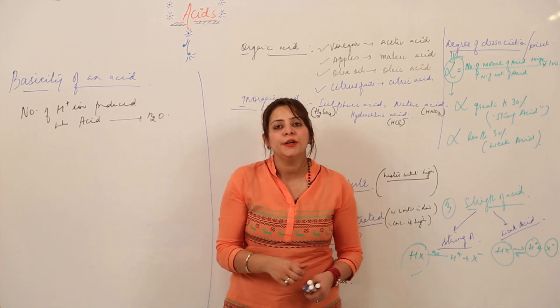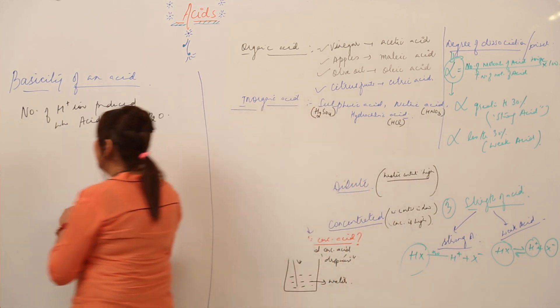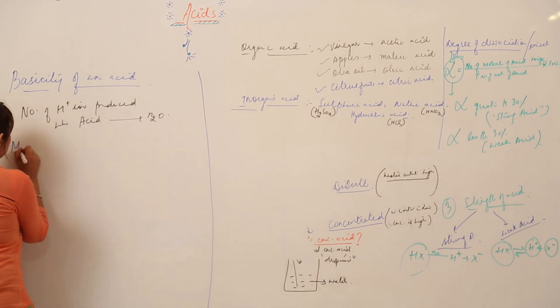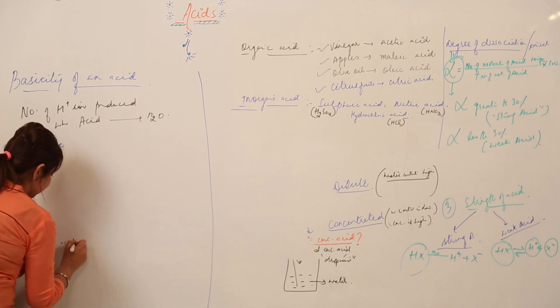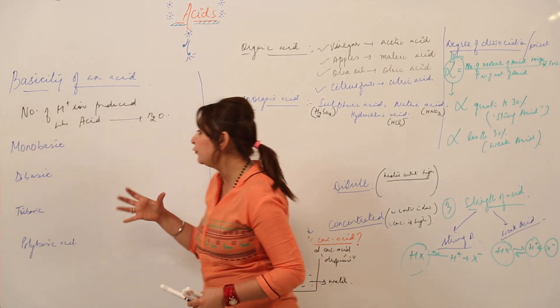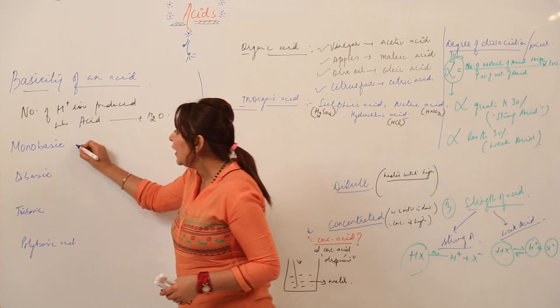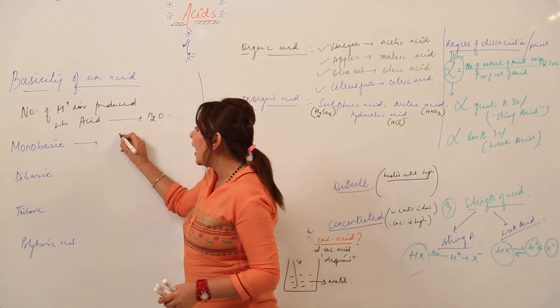Depending upon that, we have different types of acids. One is monobasic acid, we have dibasic acids, we have tribasic acids, or we can classify as polybasic acid. Now what is the difference between them?